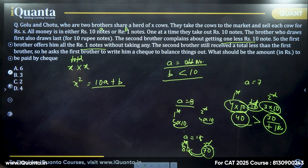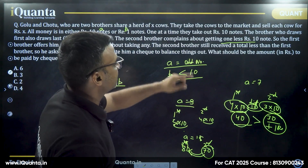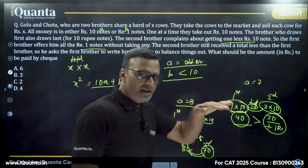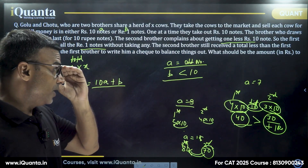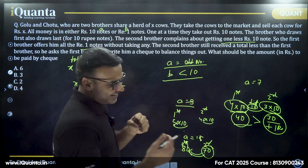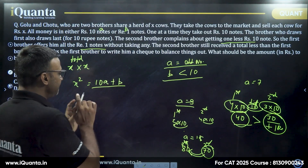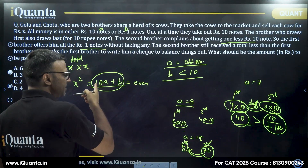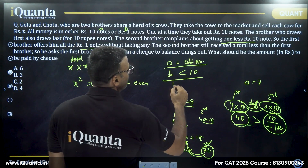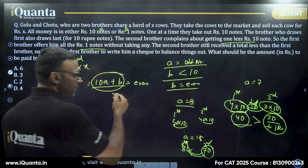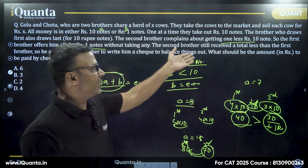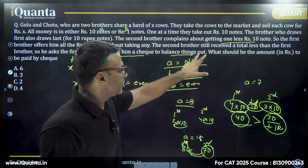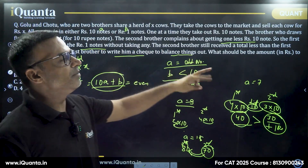So we know A is an odd number and B is a single-digit number. The second brother asks the first to write a check to balance things out so the total amounts become equal. For the amount X squared to be divided into two equal parts, it must be an even number. Now 10A is already even, so B has to be an even number as well.